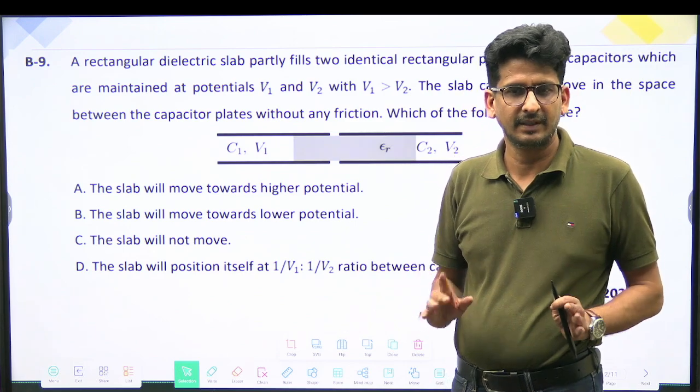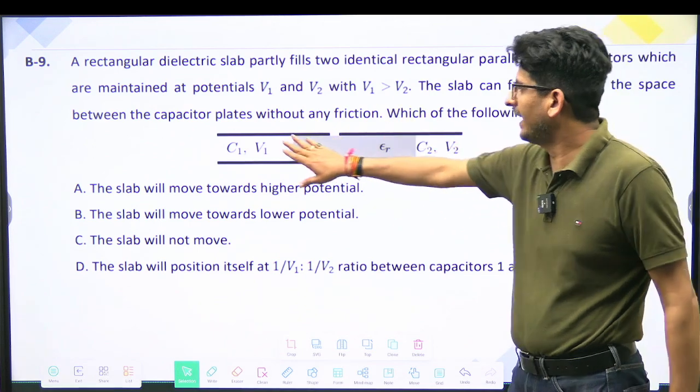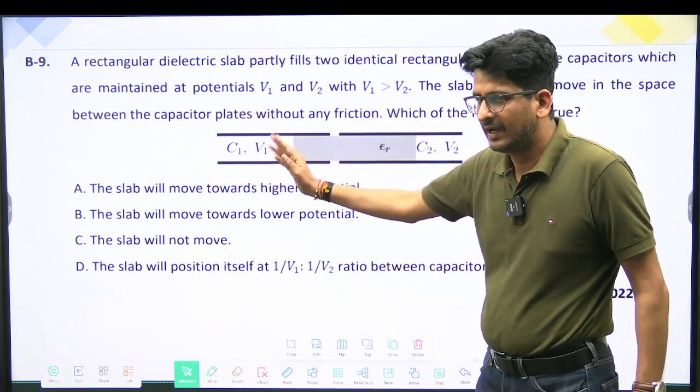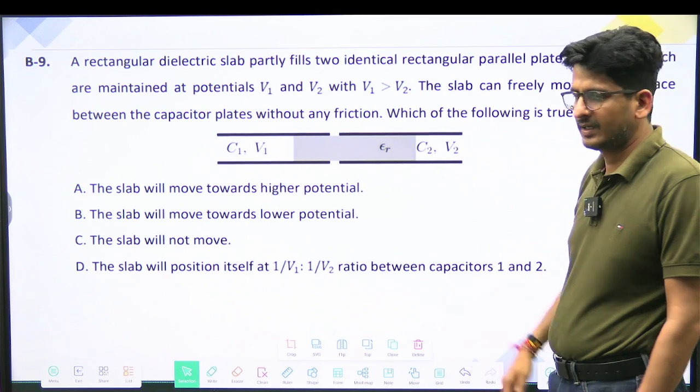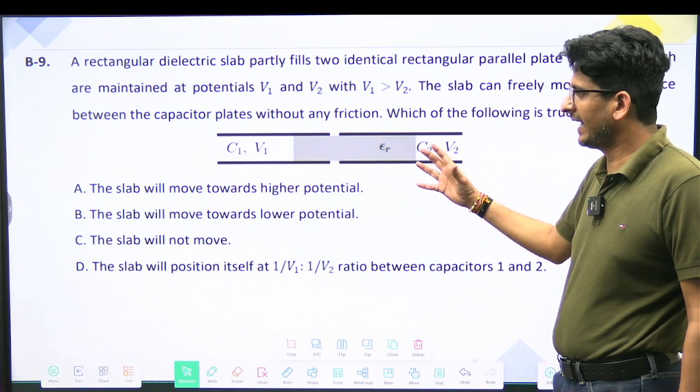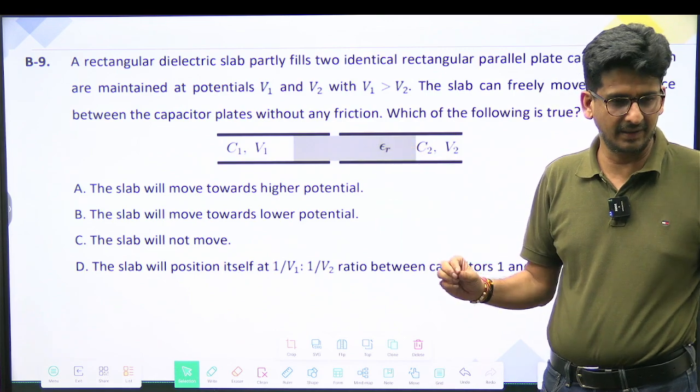So if the field is higher this side it will go to left, and if the field is higher right side it will go to right. So this dielectric will be going towards the higher electric field where the magnitude of the field is high.